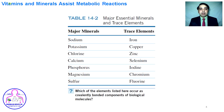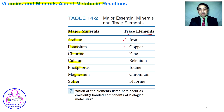Vitamins and minerals assist metabolic processes. Major minerals in our body include sodium, potassium, chlorine, calcium, phosphorus, magnesium, and sulfur, which are present in large quantities. Some minerals are present in smaller quantities and are called trace elements, including iron, copper, zinc, selenium, iodine, chromium, and fluorine.